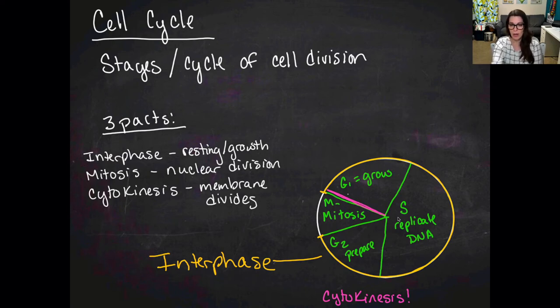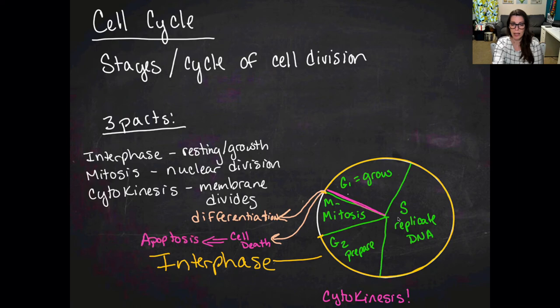So the main checkpoint that we're going to talk about is right there between G1 and M phase. There are two paths that the cell can take at that point. After it divides, the cell can move on towards differentiation, or if there is something the matter with the cell, it can trigger apoptosis. And apoptosis just means programmed cell death.